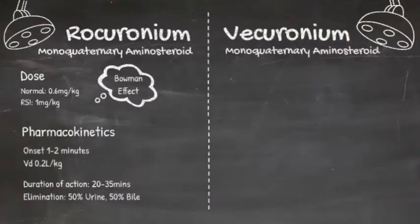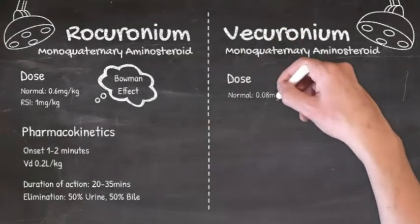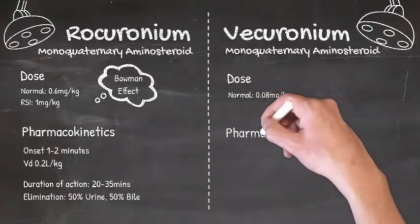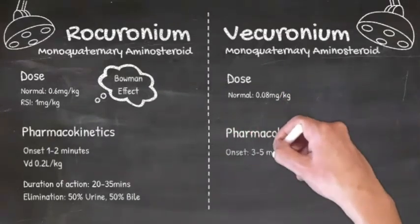Vecuronium is also a monoquaternary amino steroid but is much more potent than rocuronium with a dose of 0.08mg per kilogram, so certainly can't be used for an RSI. Its onset of action is far too slow for that, only achieving optimum intubating conditions in 3 to 5 minutes.